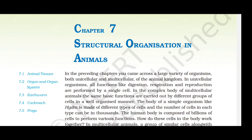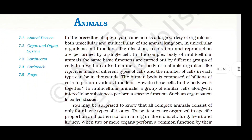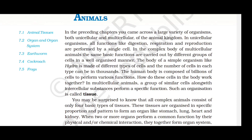Chapter 7: Structural Organization in Animals. In the preceding chapters, you came across a large variety of organisms, both unicellular and multicellular of the animal kingdom. In unicellular organisms, all functions like digestion, respiration and reproduction are performed by a single cell. In complex multicellular animals, the same basic functions are carried out by different groups of cells in a well-organized manner.